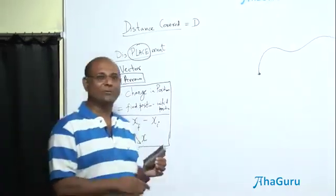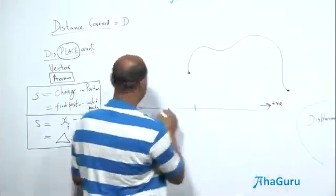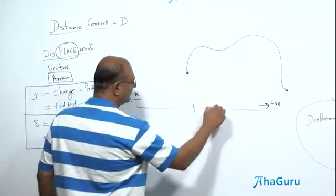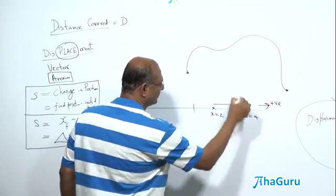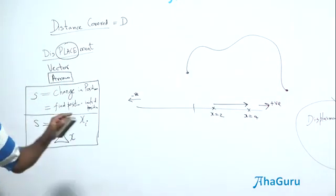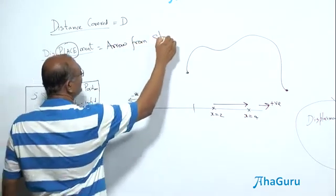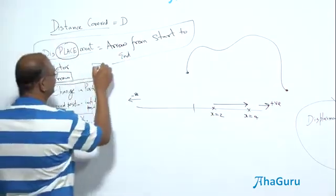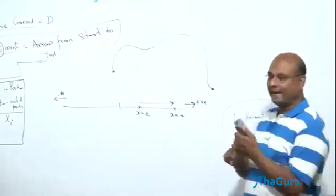For traveling on the x-axis, it shows direction quite easily. This is the positive direction, this is the negative direction. If I move from x equals 2 to x equals 4, then this was my displacement, because displacement is an arrow from start to finish — always an arrow from start to end. That's the best and easiest definition of displacement.